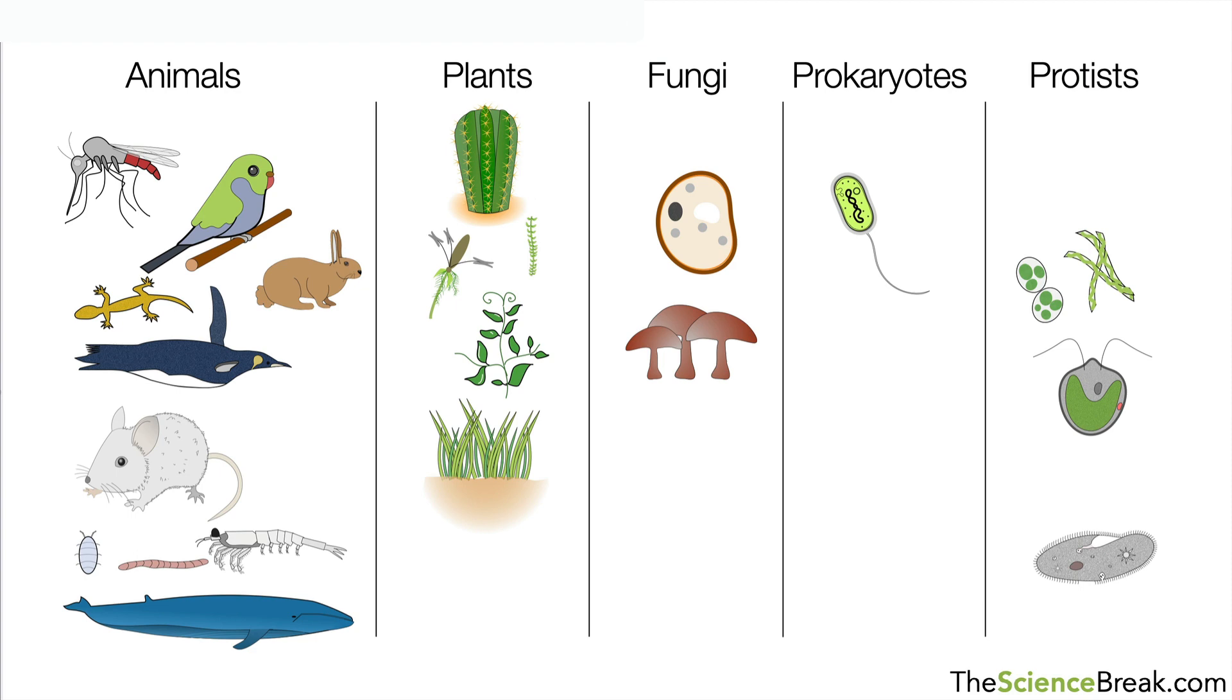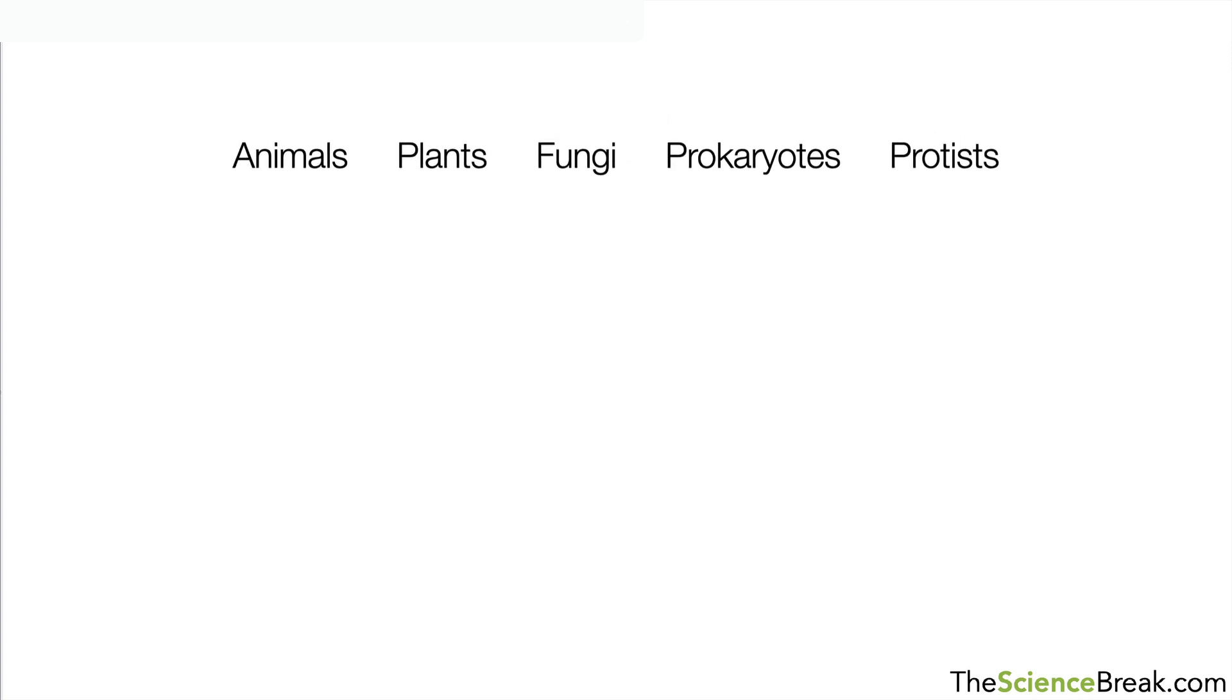However, this system has a name. It's called the Five Kingdom Classification System. Now, the slight problem with this is that it's a very old system. In fact, it's hundreds of years old. It has helped us to group living things, but it's quite an old system.